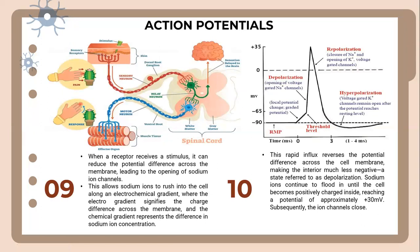When a receptor receives a stimulus, it can reduce the potential difference across the membrane, leading to the opening of sodium ion channels. This is the stage of depolarization, where sodium ions rush into the cell along their electrochemical gradient — the electrochemical gradient reflecting both the charge difference across the membrane and the difference in sodium ion concentration. This rapid influx reverses the potential difference across the cell membrane, making the interior much less negative, a state referred to as depolarization.